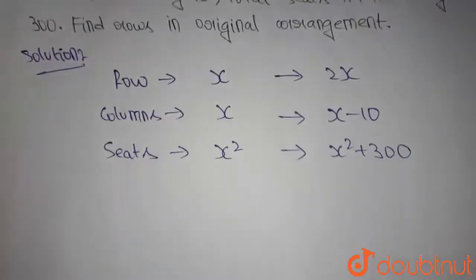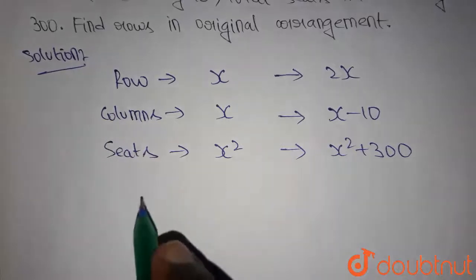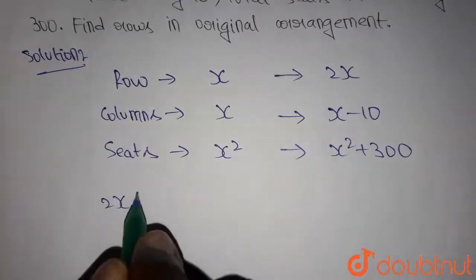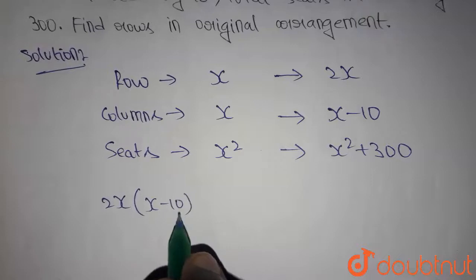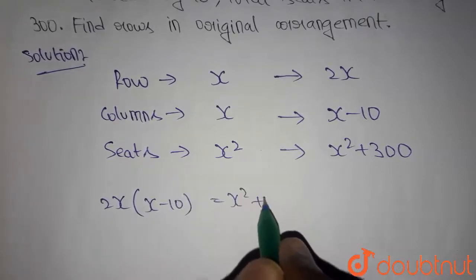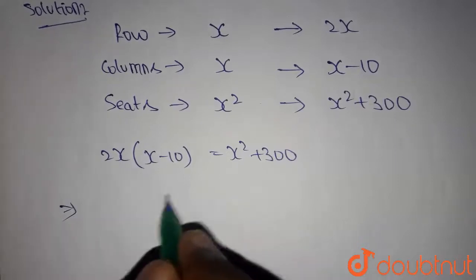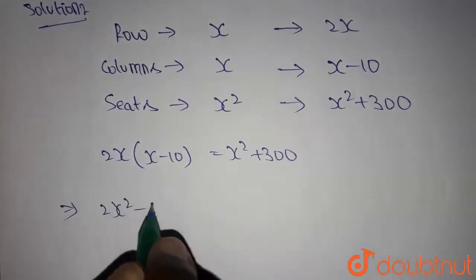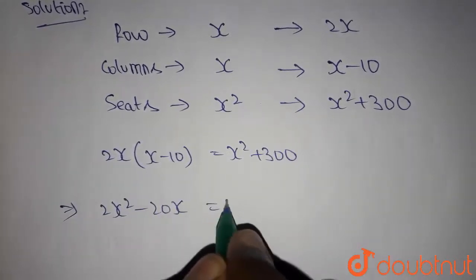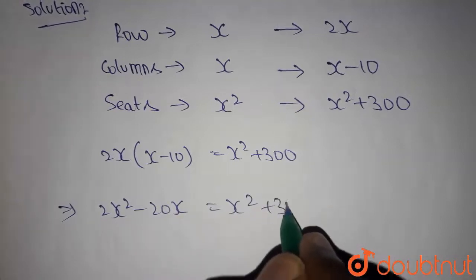So the number of columns into number of rows will give the number of seats. So we get 2x into x minus 10 is equals to x square plus 300. Now we have to solve this equation to get the value of x. We get 2x square minus 20x equals x square plus 300.